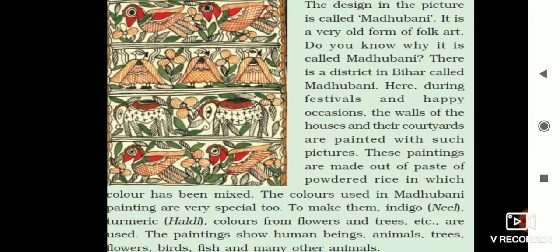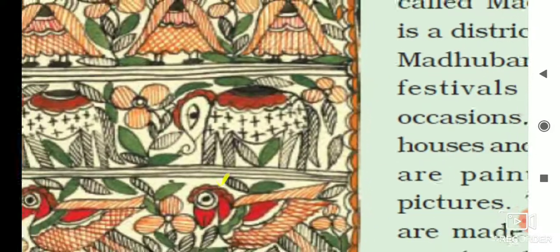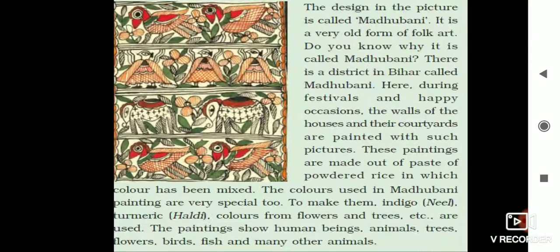The paintings show human beings, animals, trees, flowers, birds, fish, and many other living things. Children, you can also try to make some Madhubani drawings. Take a small 10 by 10 inch paper and try to draw a Madhubani painting on your own. Do not copy from anywhere — you can look at the picture for reference. Simple figures are drawn, so you can try to draw something similar. This can be a subject enrichment activity for you.